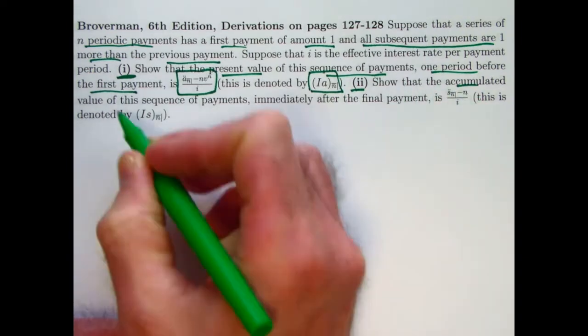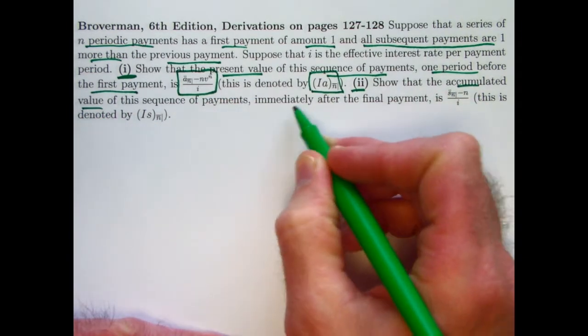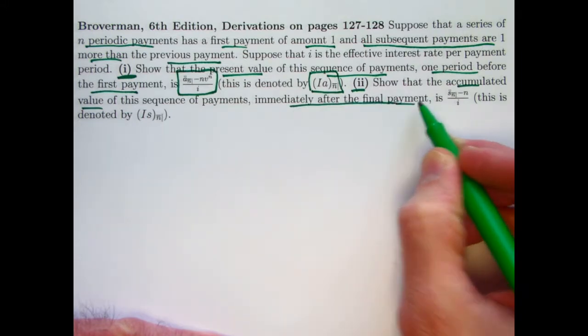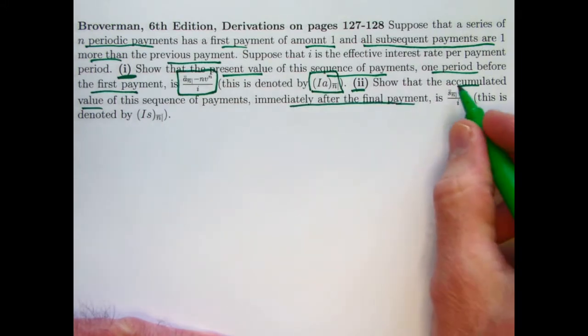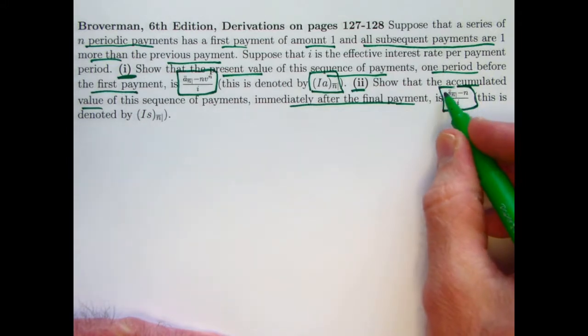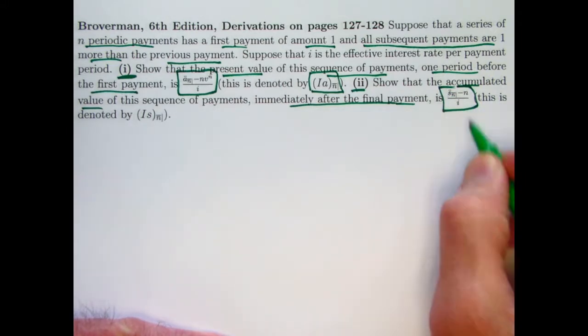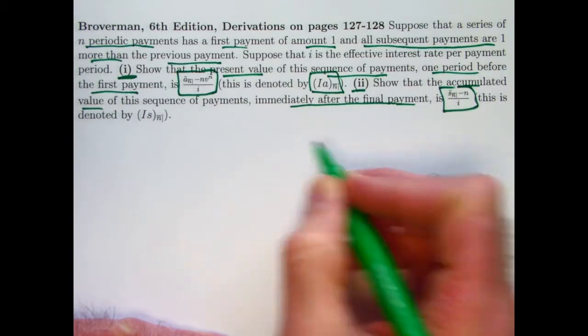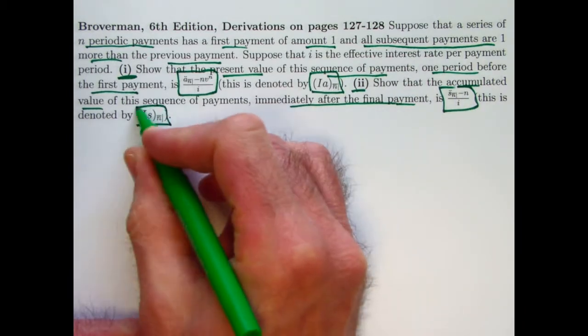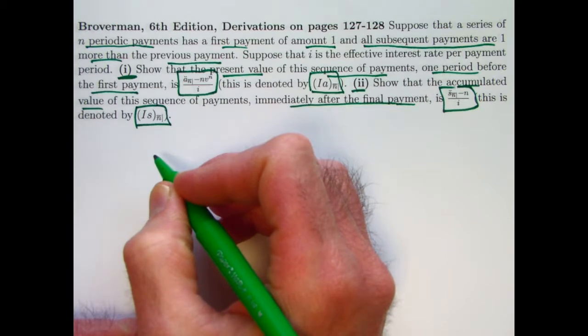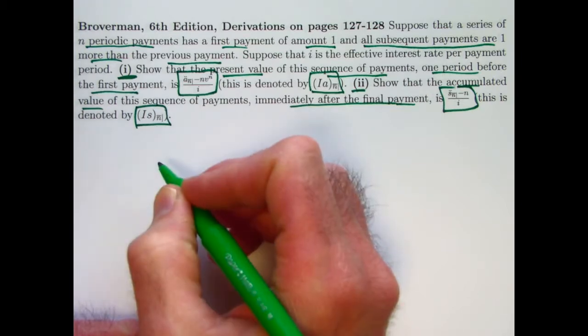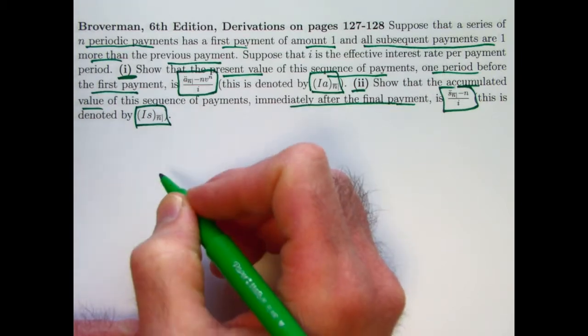Secondly, show the accumulated or future value of the sequence of payments immediately after the final payment, so again as annuity immediate, is this expression here, which again involves an annuity due, the future value of an annuity due, s_n double dot. This is denoted by (Is)_n, i again indicating that it's an increasing annuity, s that we are after the future value, and n is the number of payments.